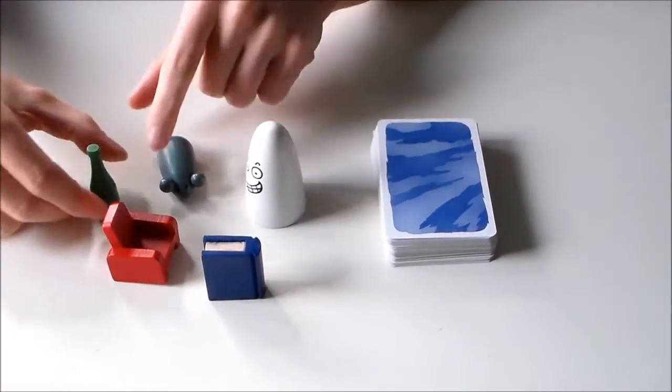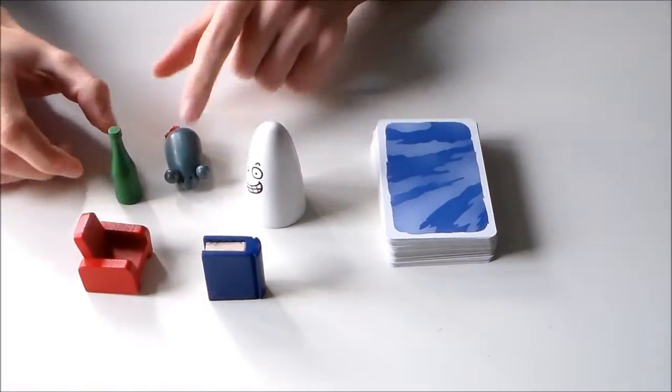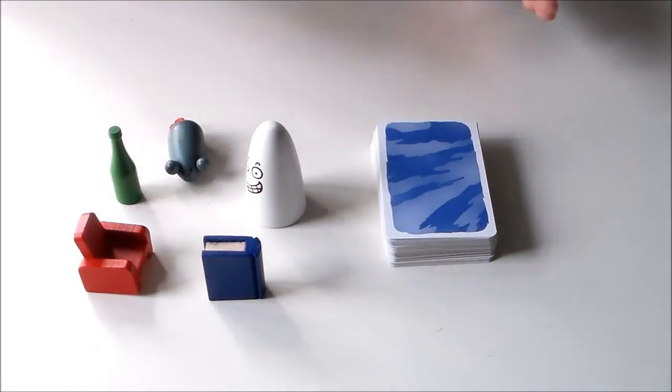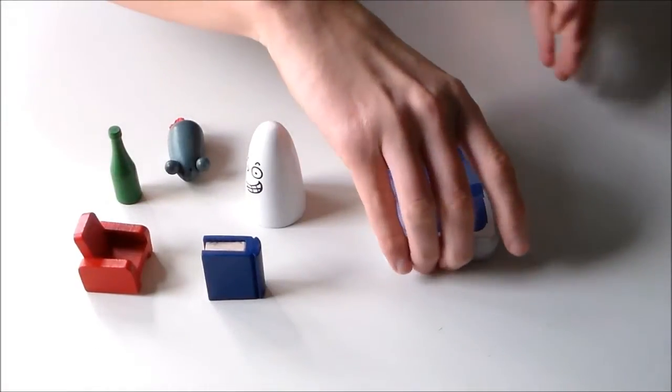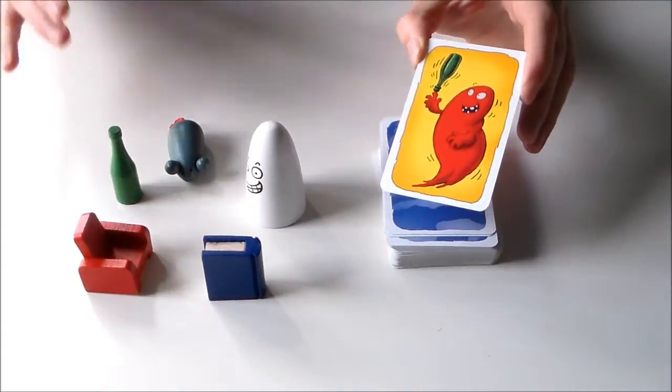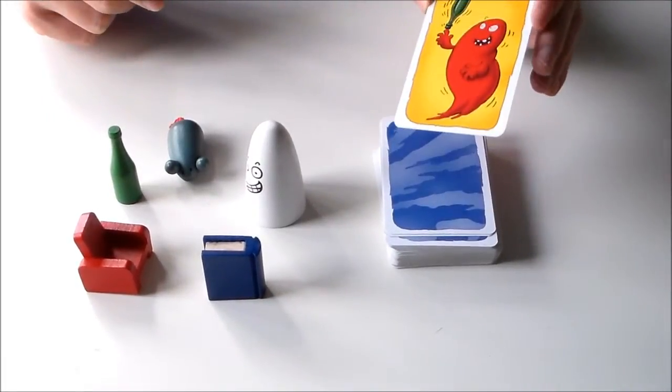So the components are these 5 little objects. You put those in the middle of the table and every turn a card from this deck gets flipped over. Then all the players have to grab as fast as they can the right object. Now how does this work?